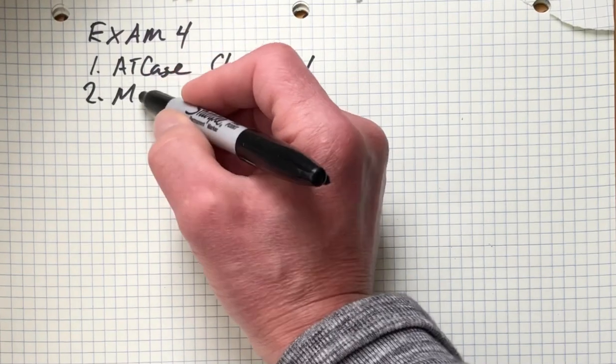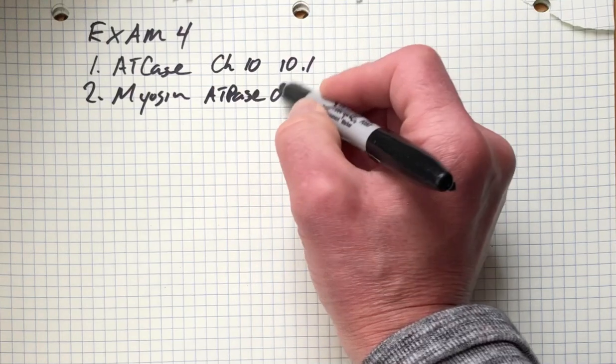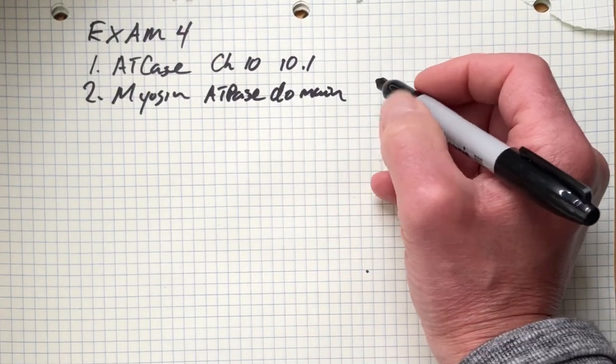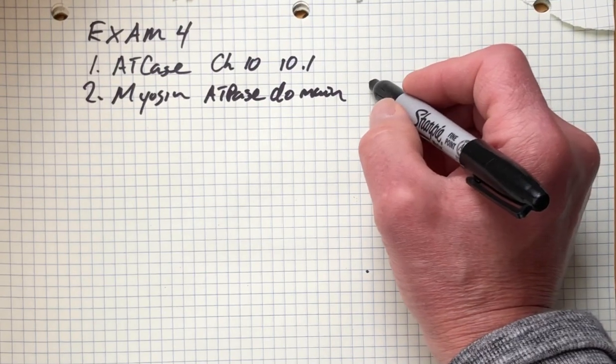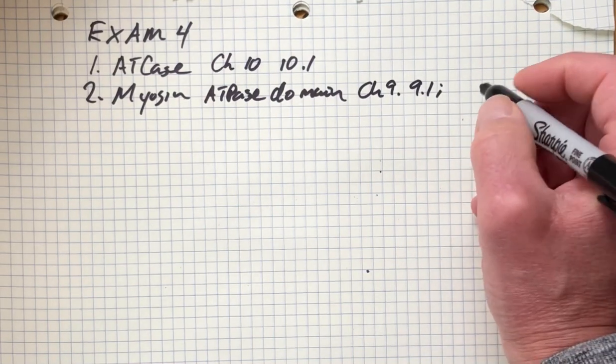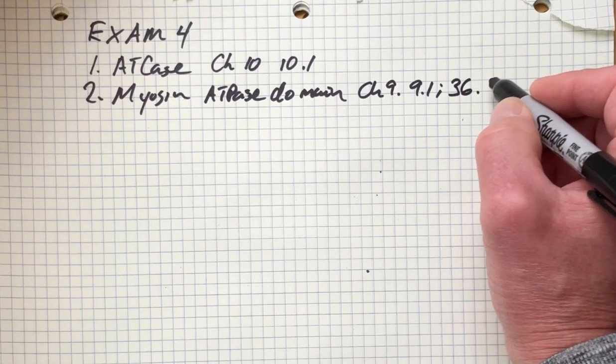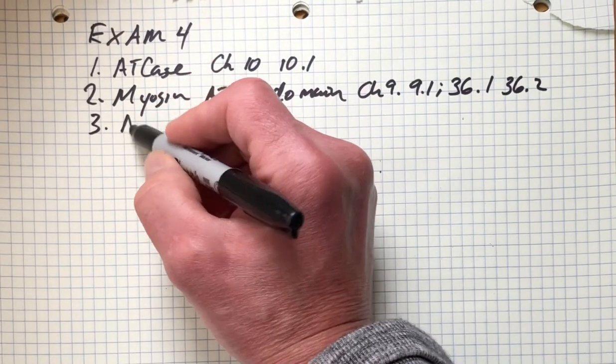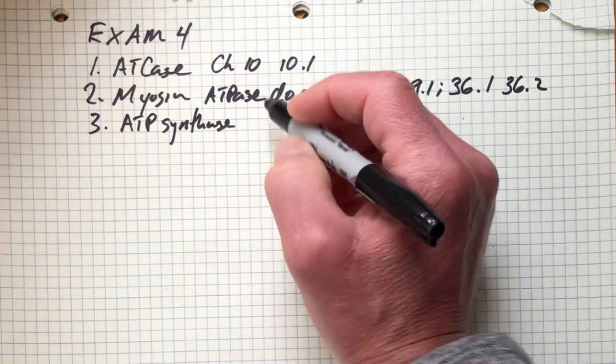Then we'll look at myosin and how the ATPase domain destroys ATP to generate mechanical force and molecular movement. That's covered in chapter 9, 9.1. Also, for the electronic text, you can read about this. There's some really good figures in chapter 36.1 and 36.2.